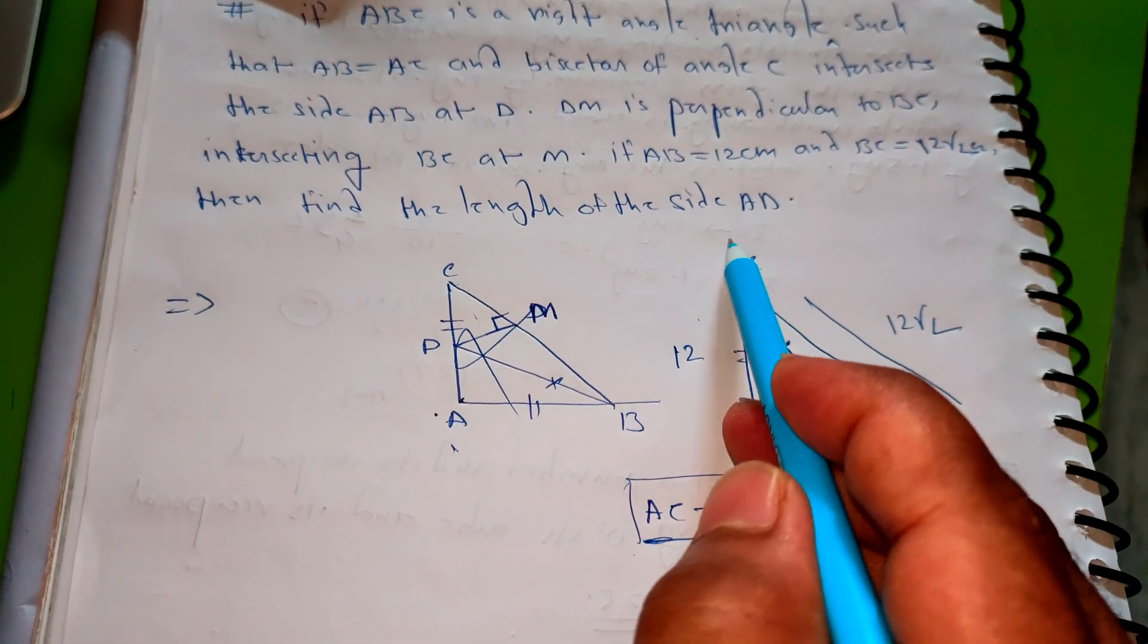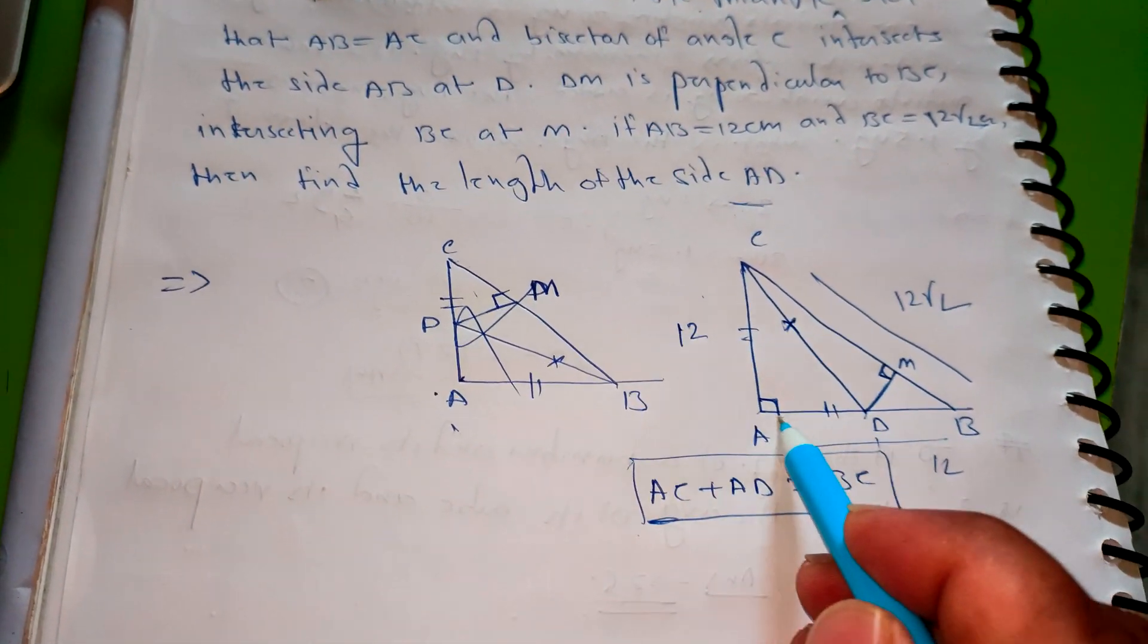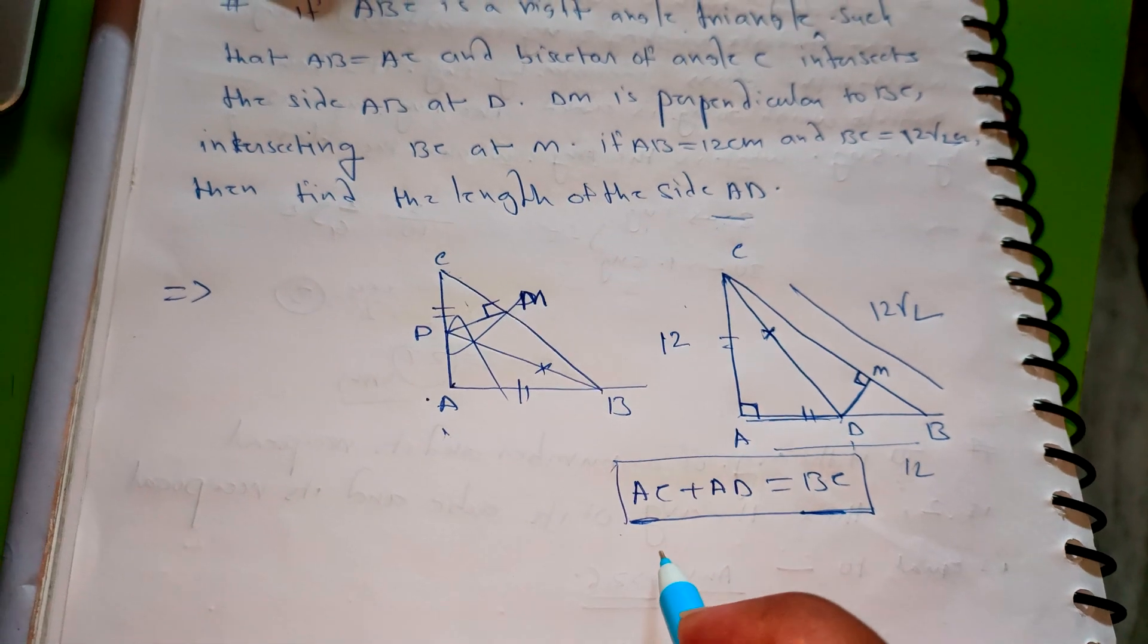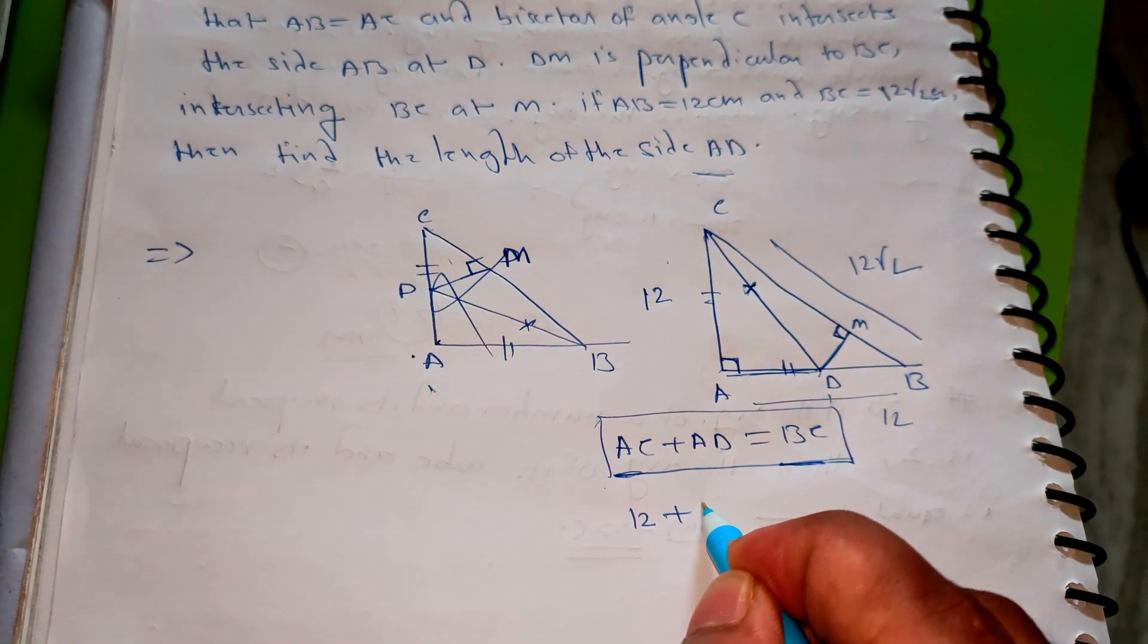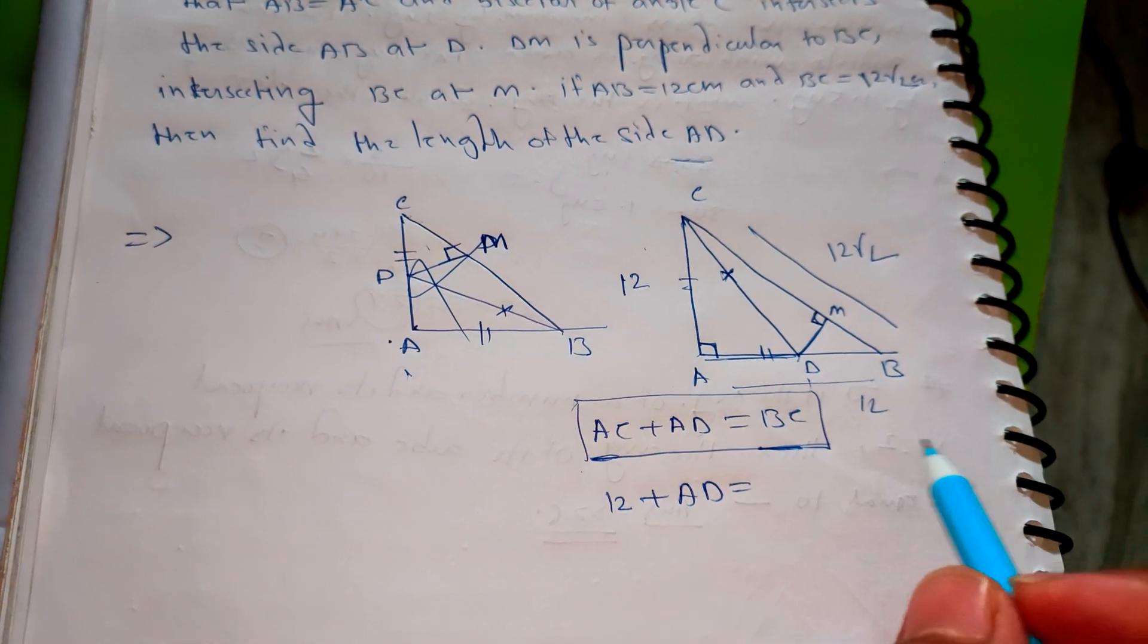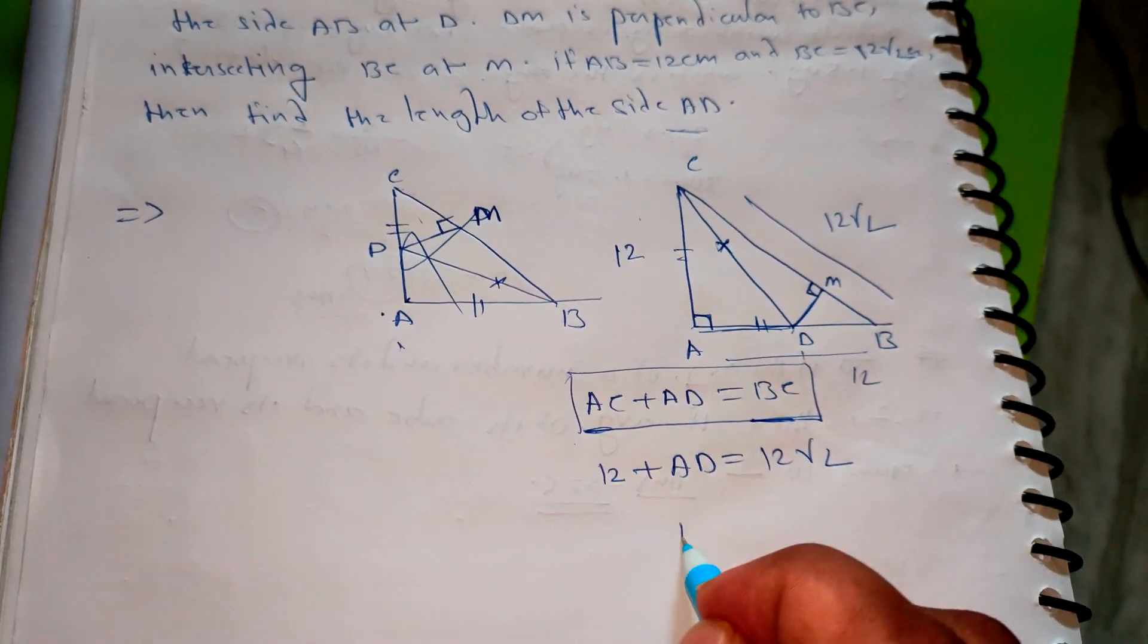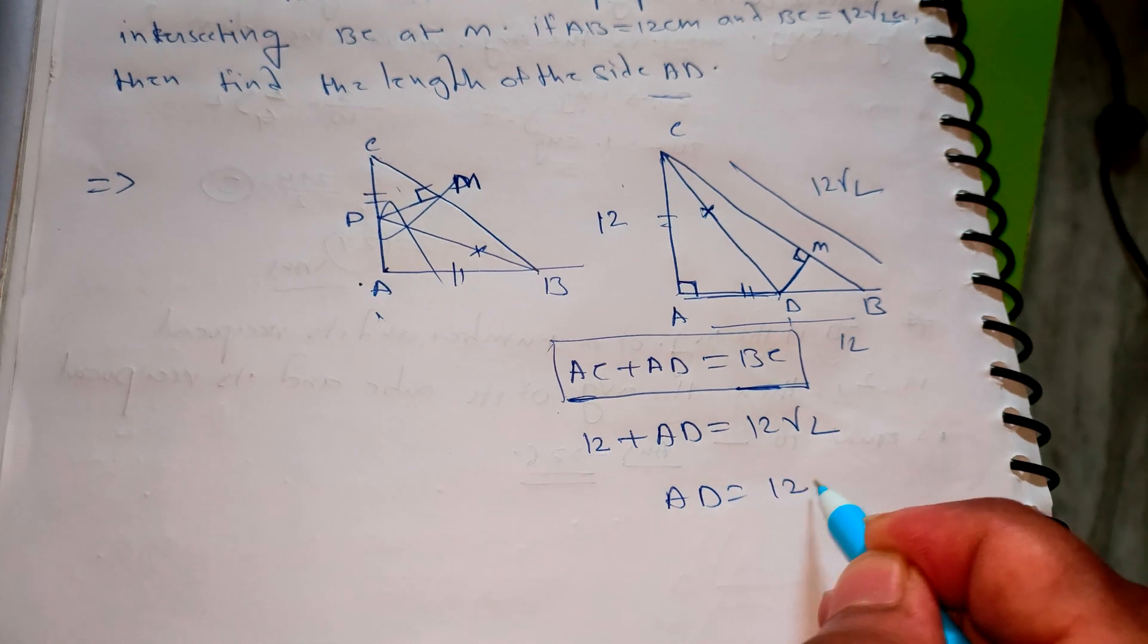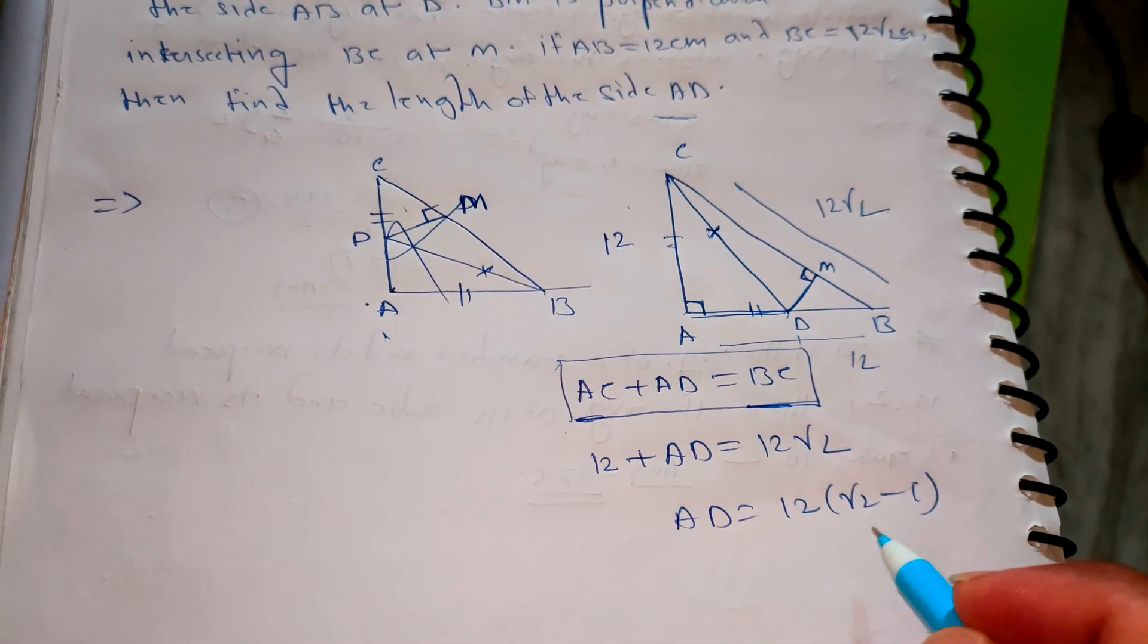So they want to find AD. AD equals 12 root 2 minus 12, which is 12 times (root 2 minus 1). This is the answer.